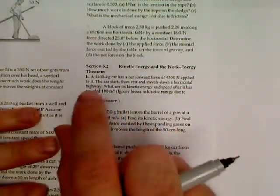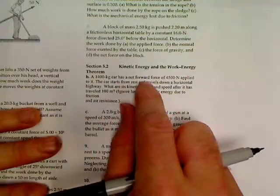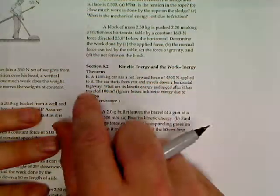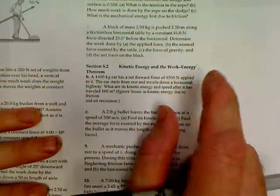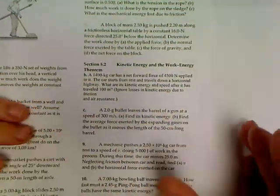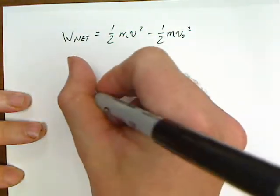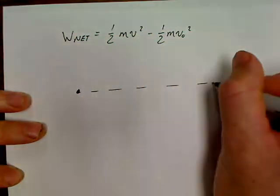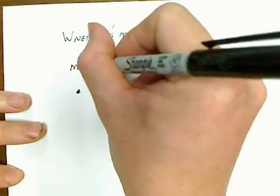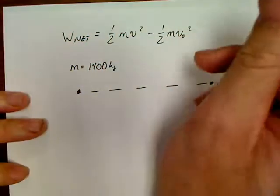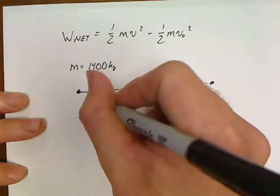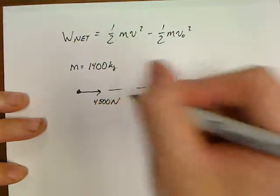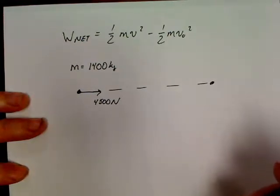So, the first question I'm going to look at is this question D. A 1,400 kilogram car has a forward force of 4,500 newtons applied to it. The car starts from rest and travels down a horizontal highway. Determine its kinetic energy and speed after traveling 100 meters. So, here's what we've got. There's a car. It tells us that the mass of the car is 1,400 kilograms. So, we'll go ahead and take care of that. Mass of the car is 1,400 kilograms. It says that there is a force on the car of 4,500 newtons. So, there's our 4,500 newton force on that car. What else does it tell us about it?